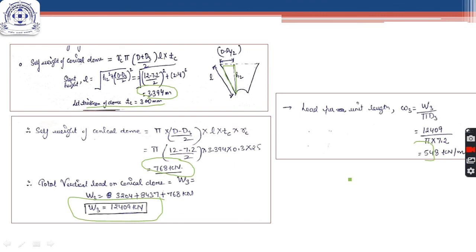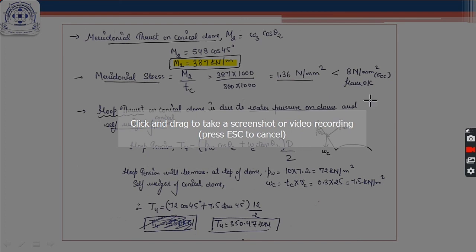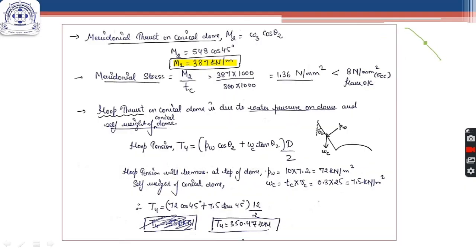The meridional thrust along the conical dome = W3·(load per unit length) / cos θ2. Since θ2 = 45°, meridional thrust = 548 × cos 45°. Dividing by the dome thickness gives the meridional stress = 1.36 N/mm², which is less than the permissible stress, hence the check is satisfied.